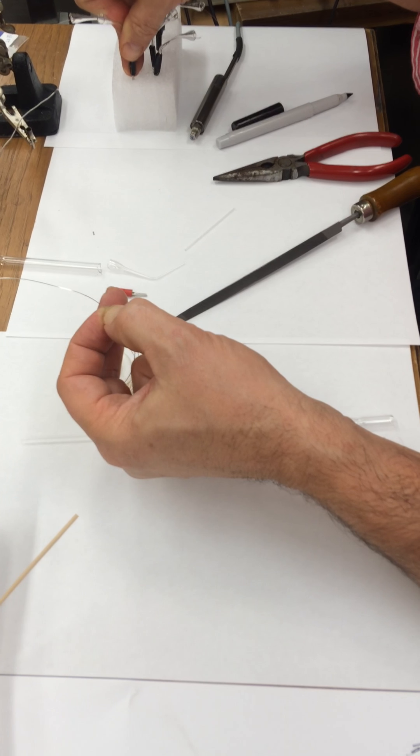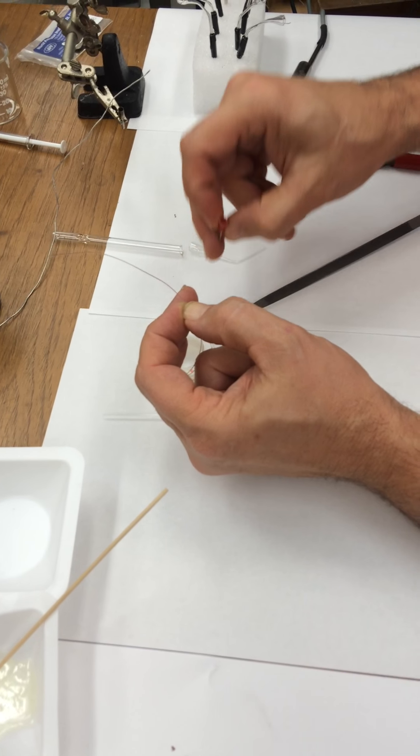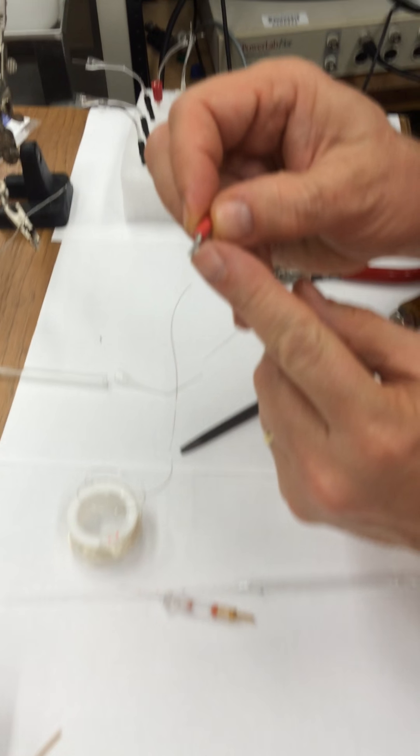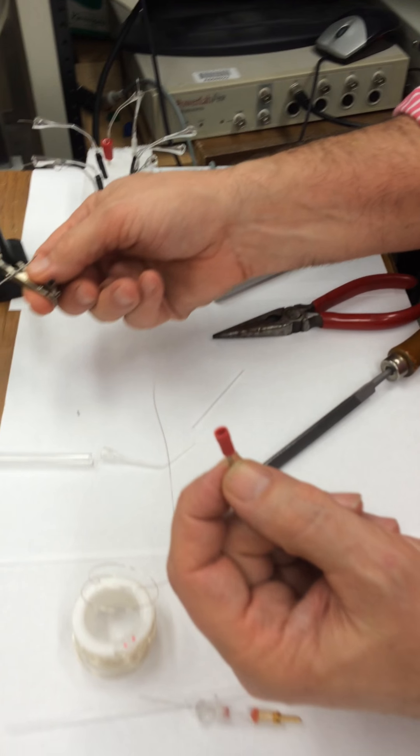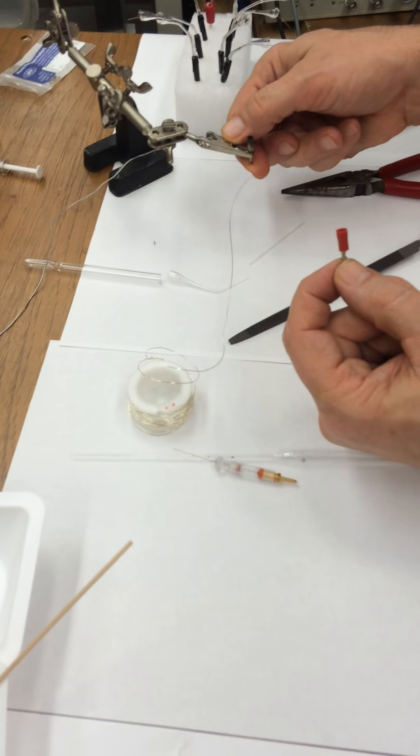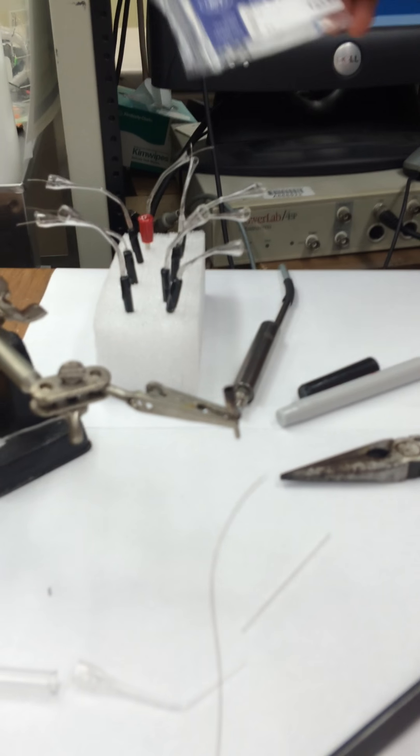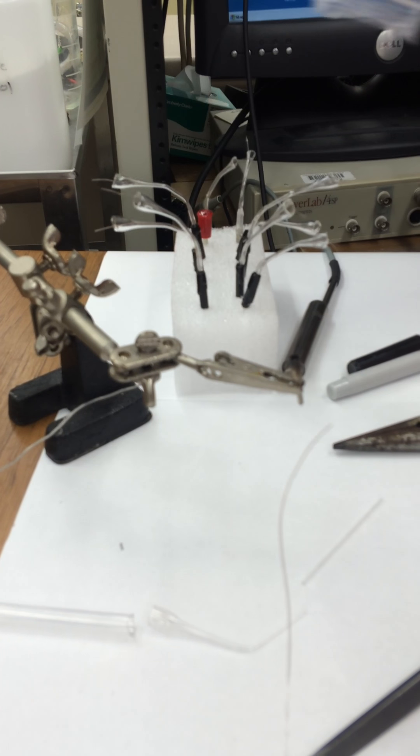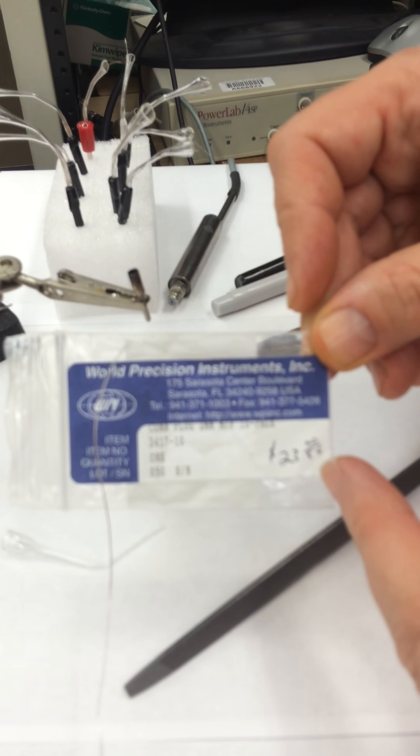Now we can solder it onto our little holder. So you take a little holder like this. It's a 2 millimeter pin that you can order from various places. They come in different types. Here's one over here as well. The ones that we are using over here that are on our electrodes that we've already made are from World Precision Instruments and it only costs $23 for a pack of ten.